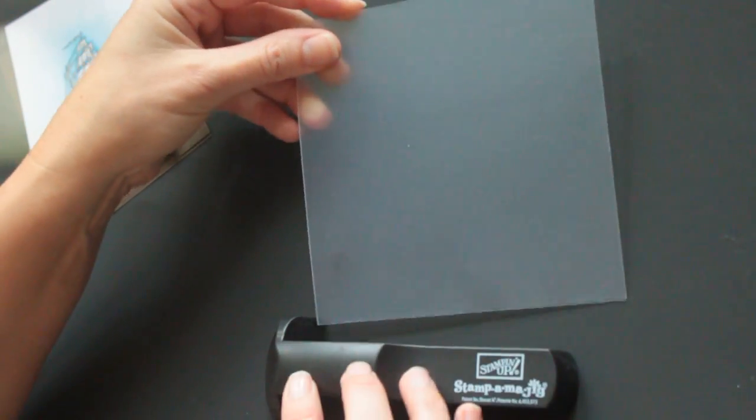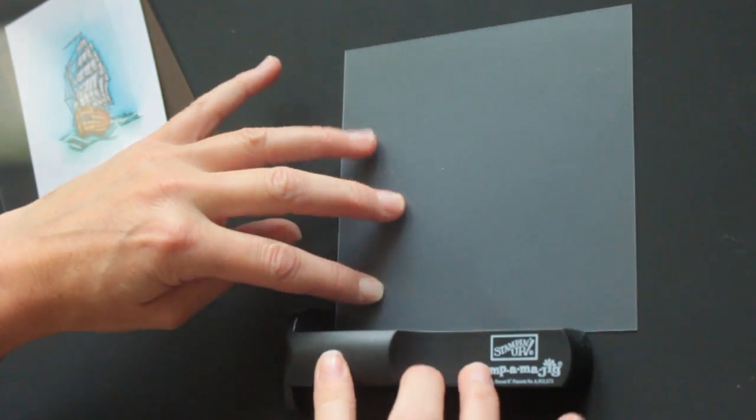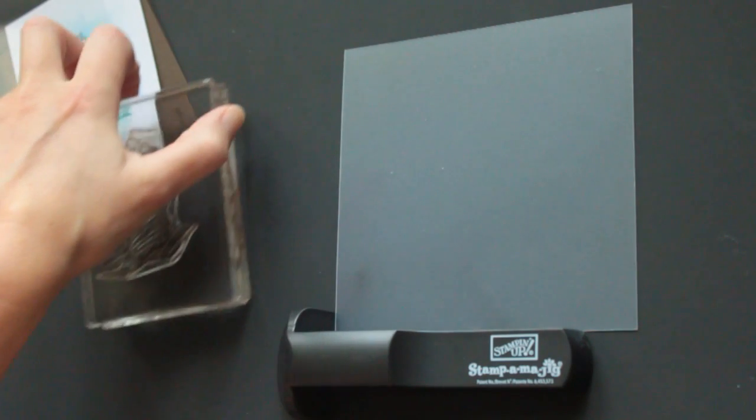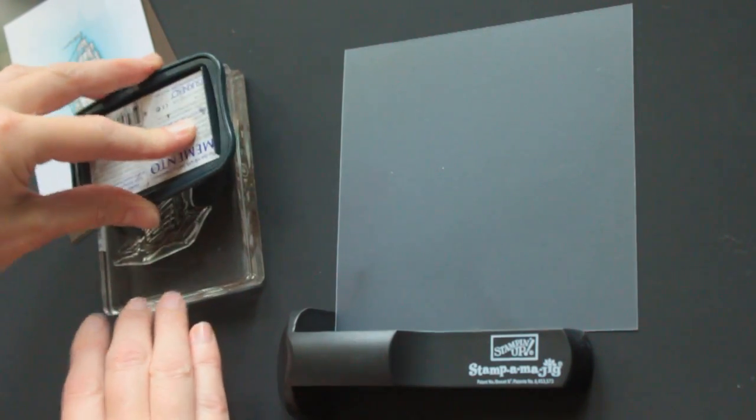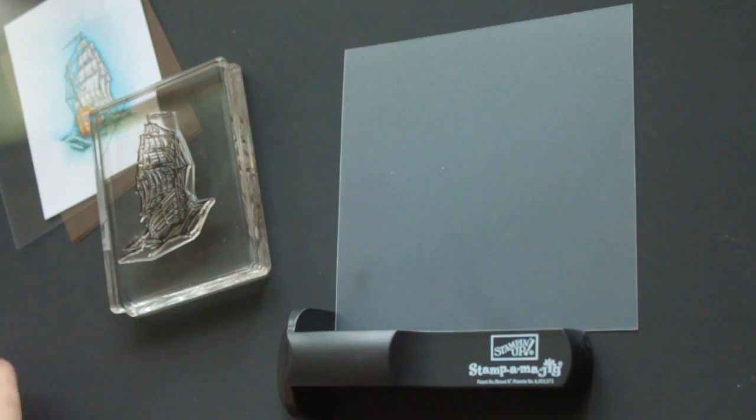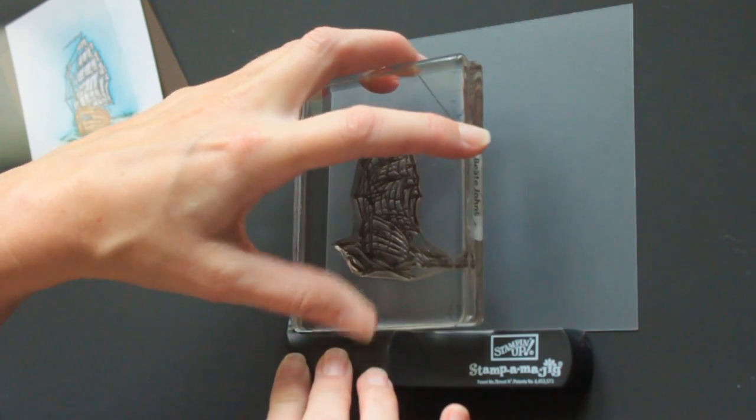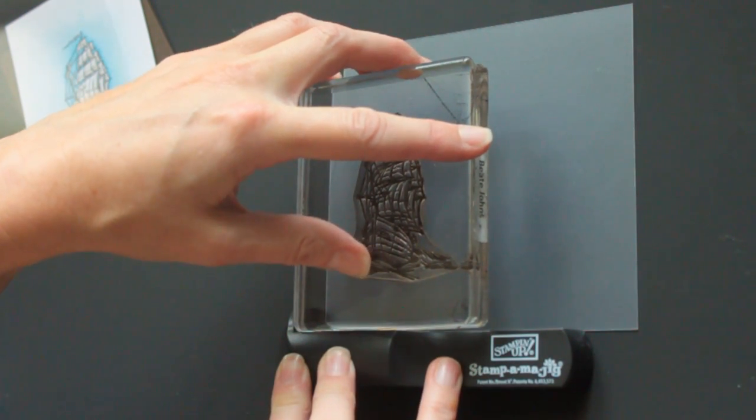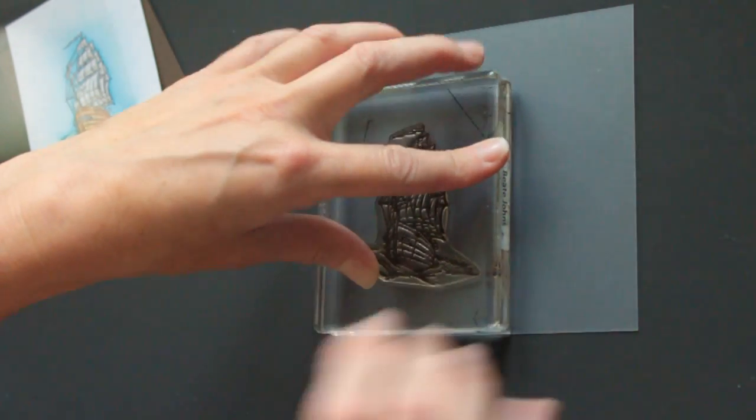It comes with a clear plastic sheet, and you line that up in the corner of your stamp-a-ma-jig. Ink up your stamp, and you can use that with wooden stamps or acrylic stamps, it doesn't matter. And stamp, and guide the left-hand corner through your stamp-a-ma-jig, and stamp on your plastic sheet.